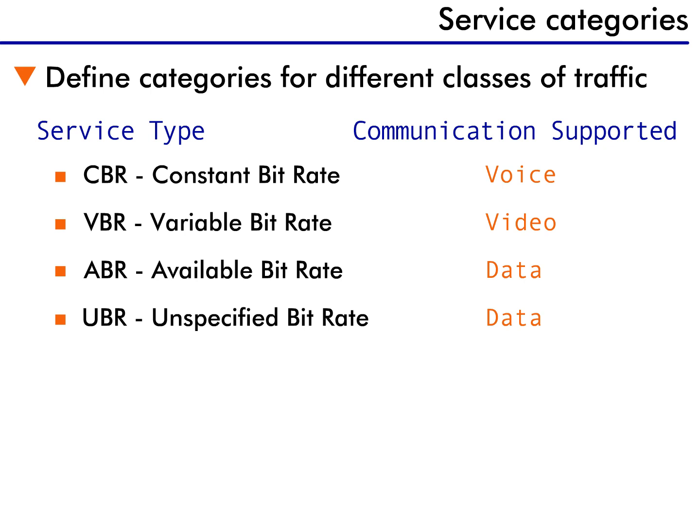ABR depends upon VBR. When VBR traffic needs more bandwidth, ABR gets less, and vice versa.